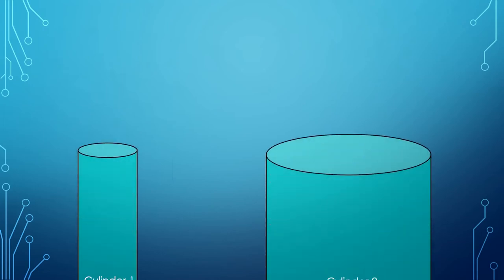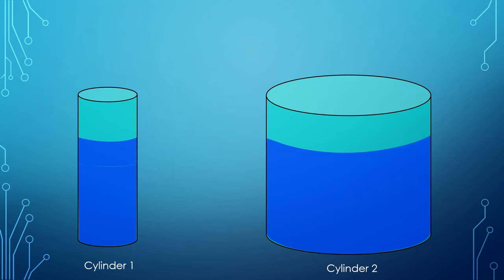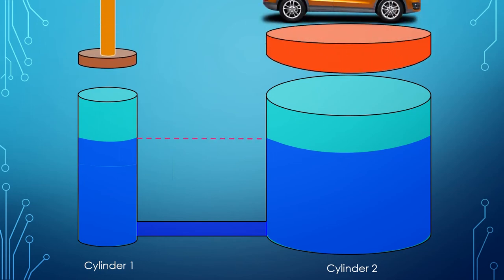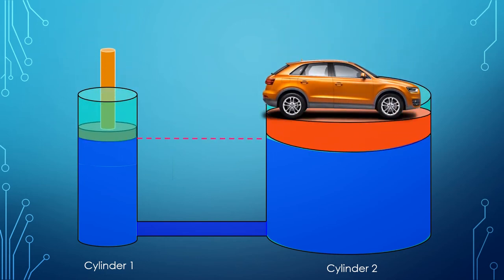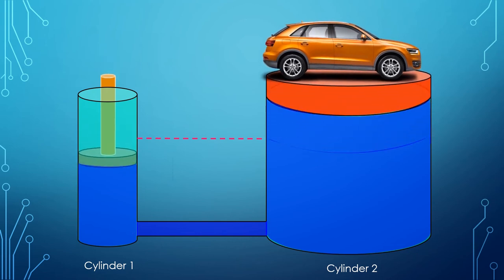It consists of two cylinders of different areas filled with a liquid up to the same height and connected to each other. When pressure is applied on the liquid in cylinder 1, this pressure gets transferred to cylinder 2 and it lifts the vehicle. The larger cylinder is used to exert a proportionally greater force than that applied to a smaller one.